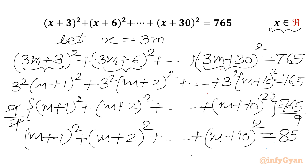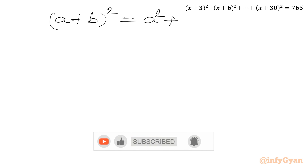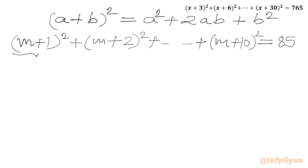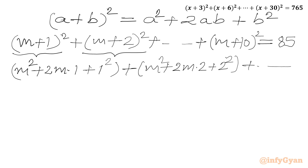Now we can use the algebraic formula: (a + b)² equals a² plus 2ab plus b². We have to expand each bracket. I will write m² + 2m(1) + 1² for the first, m² + 2m(2) + 2² for the second, and so on. The last term bracket will be m² + 2m(10) + 10². And RHS is 85.